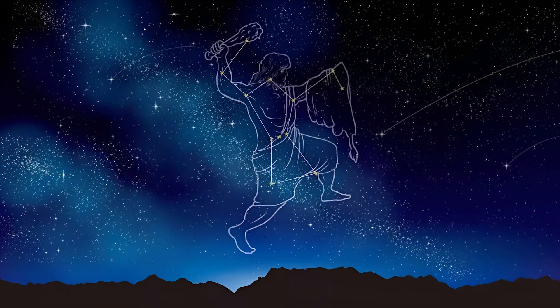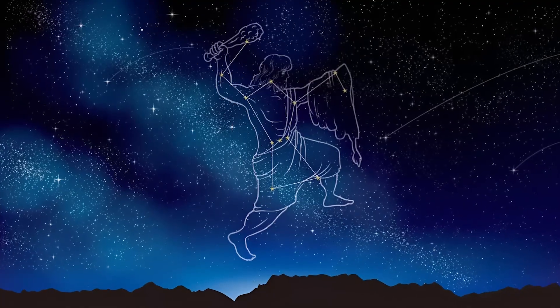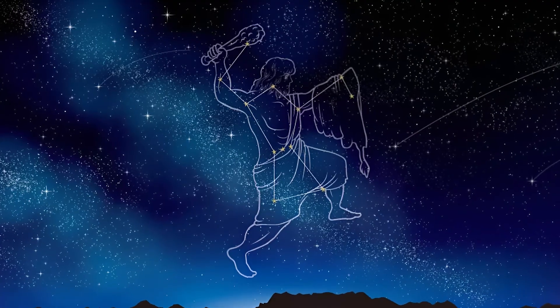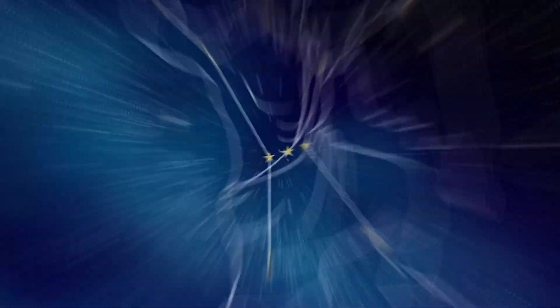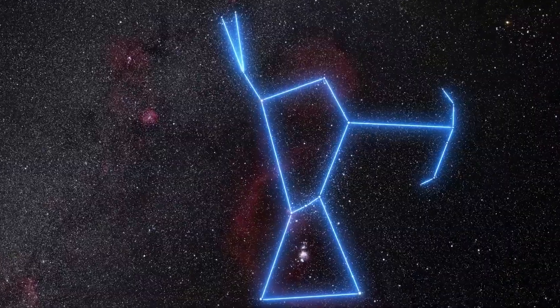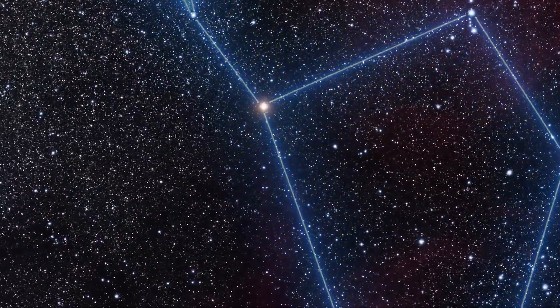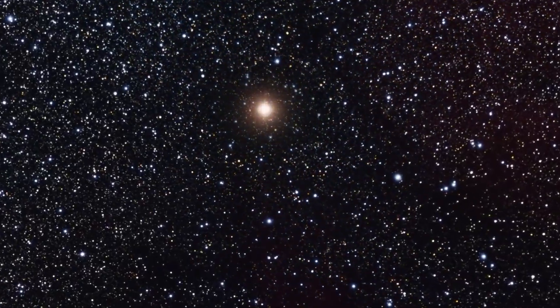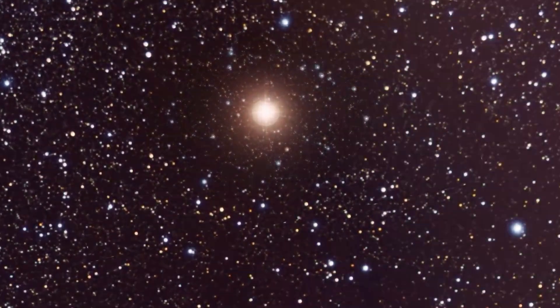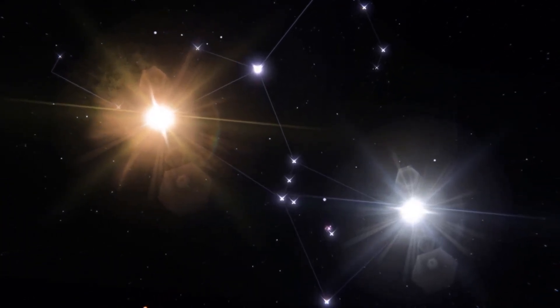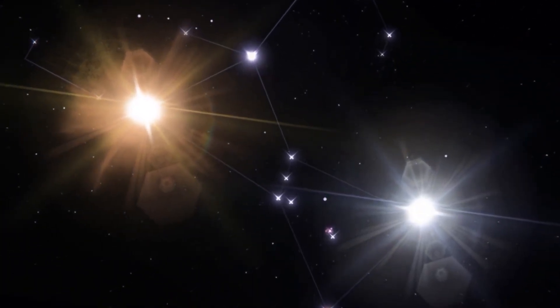The Orion constellation, a collection of stars that paints a warrior figure in our night sky, has been a navigator's guide and storyteller's muse for millennia. Dominating this constellation is none other than Betelgeuse, serving as the hunter's left shoulder, especially prominent during winter nights in the northern hemisphere. Its ruddy hue contrasts sharply with the blue-white brilliance of Rigel, Orion's other prominent star.